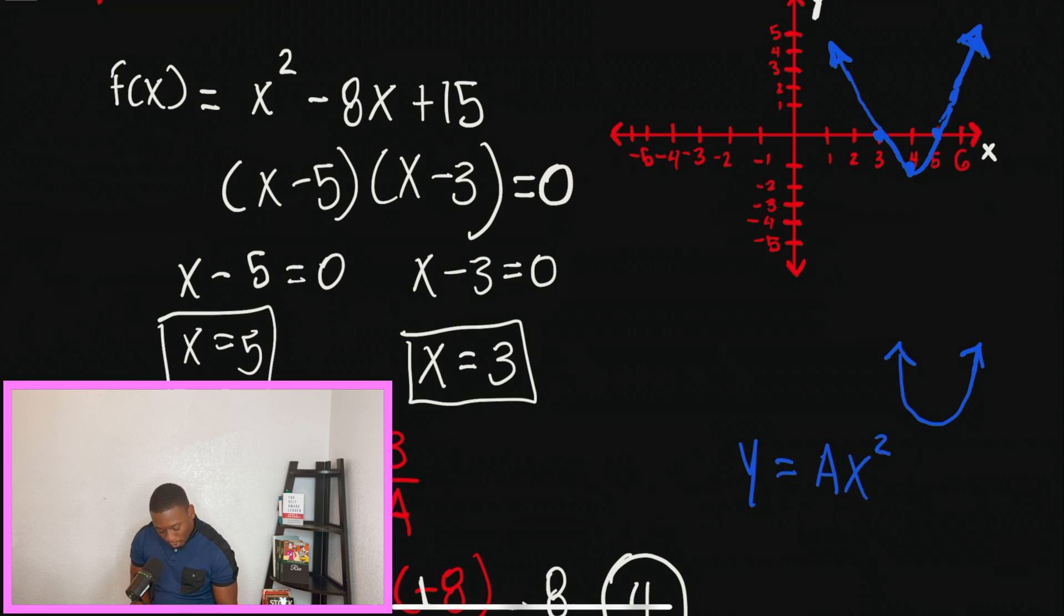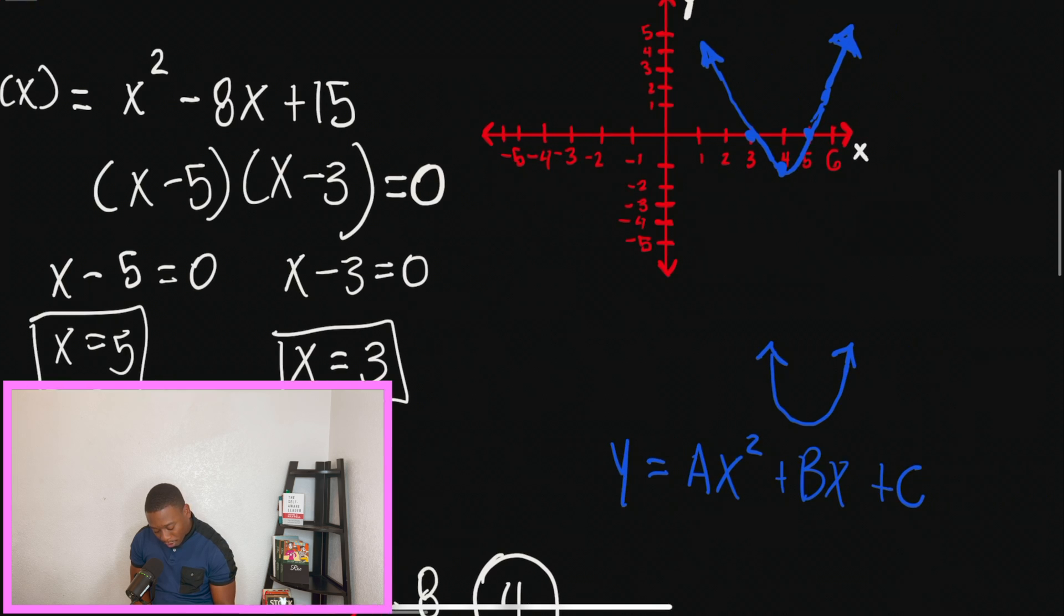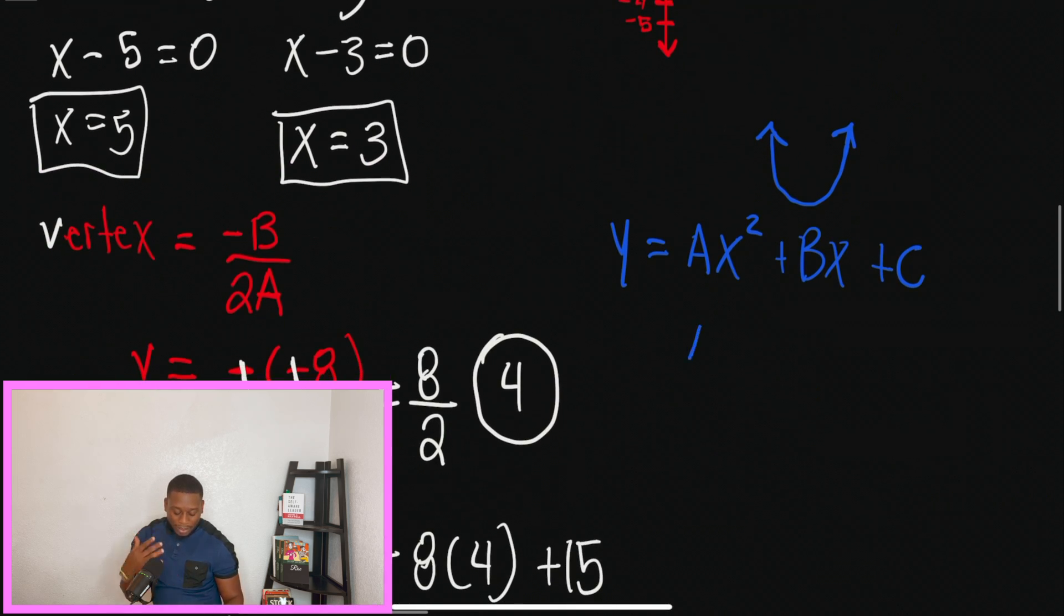So what I'm going to do is I'm going to rewrite that equation. So y equals Ax squared plus Bx plus C. And what they tell us is, if A is greater than zero, so if it's positive 1, 2, 3, 4, and up, our graph is going to open up.